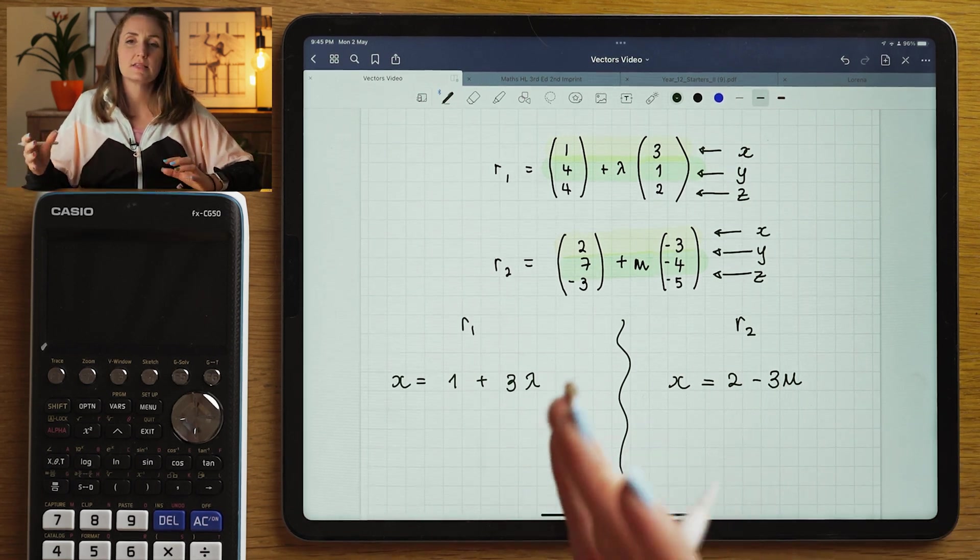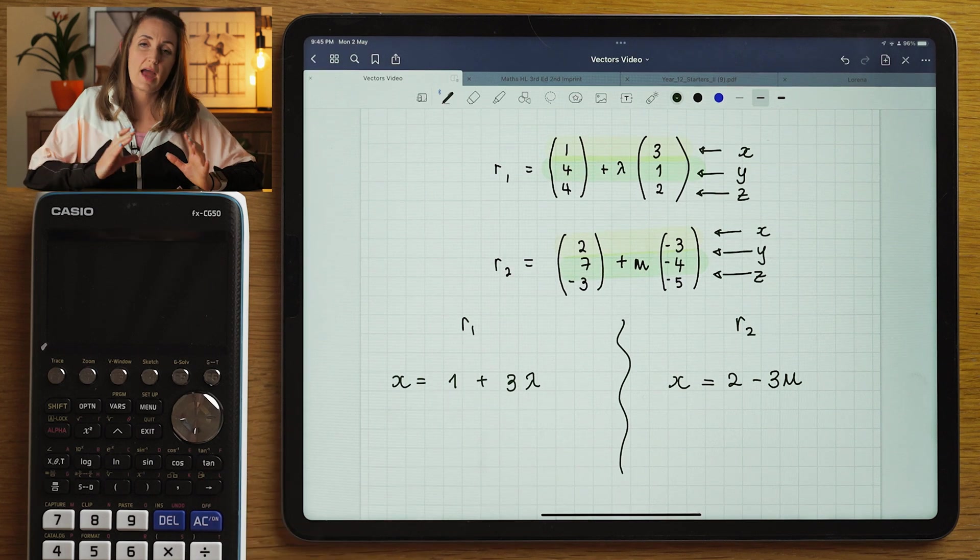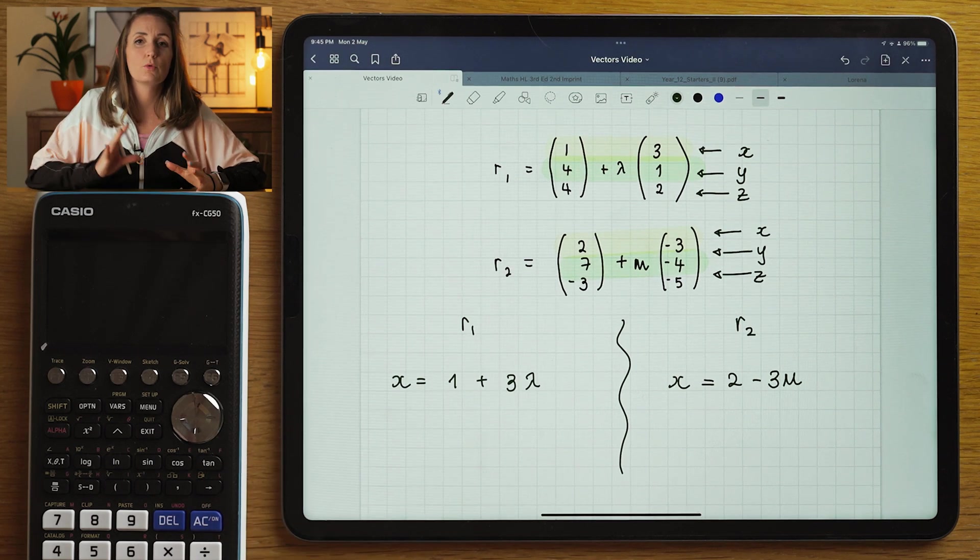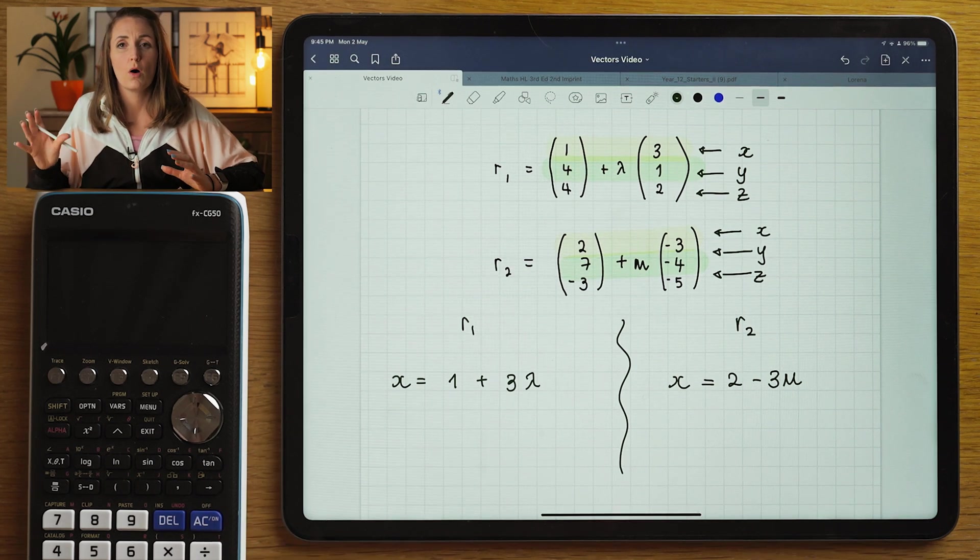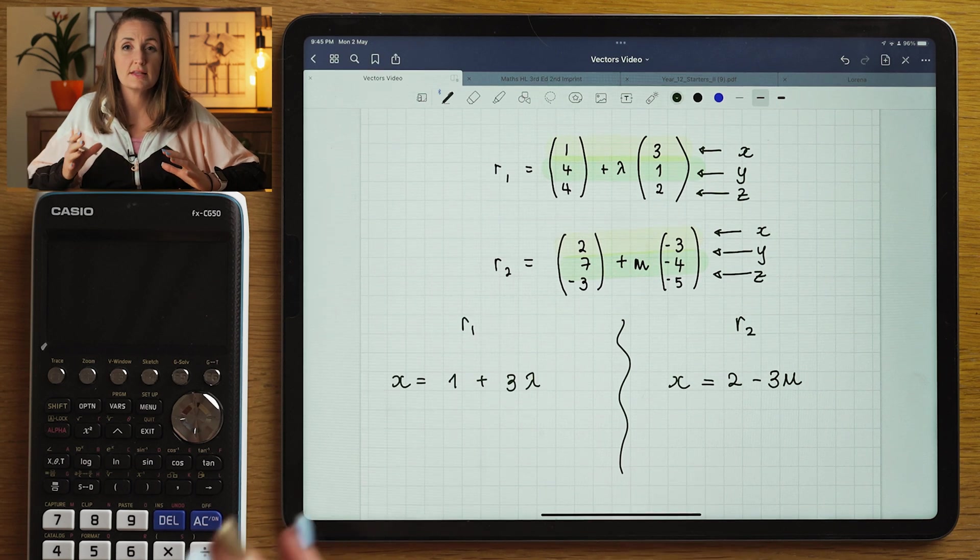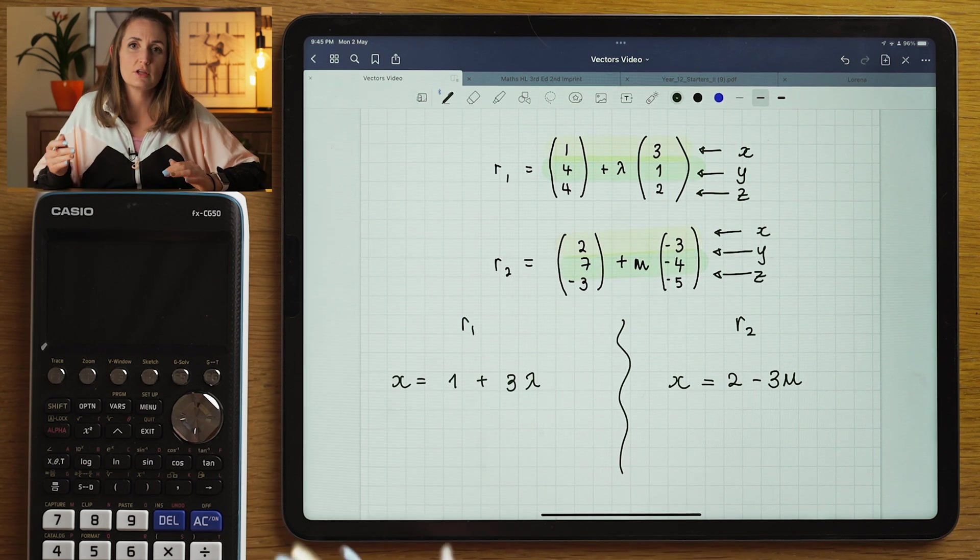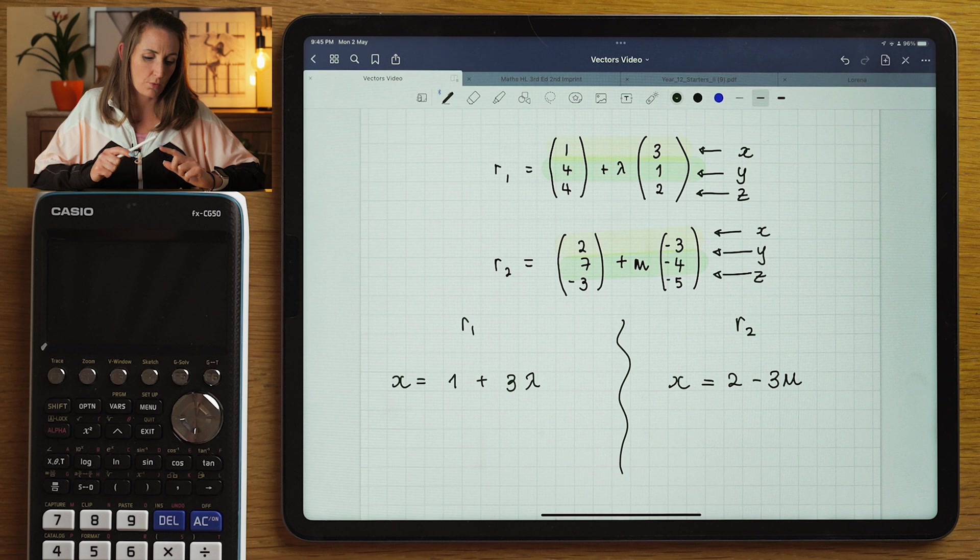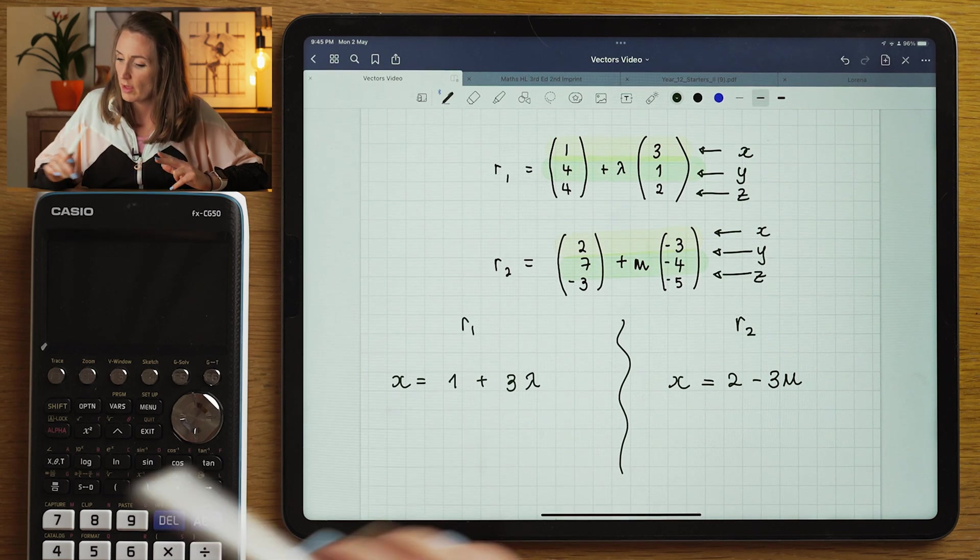And it makes sense if these points are going to intersect, that the X coordinate on the first line would be equal to the X coordinate on the second line. If two lines intersect, then all of their coordinates should match: X coordinates, Y coordinates, and Z coordinates.